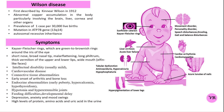The liver is often the first organ affected, leading to symptoms such as hepatomegaly — that is, a large liver — jaundice, abdominal pain and liver cirrhosis. In some cases, the disease can present as acute liver failure, particularly in adolescents and young adults.